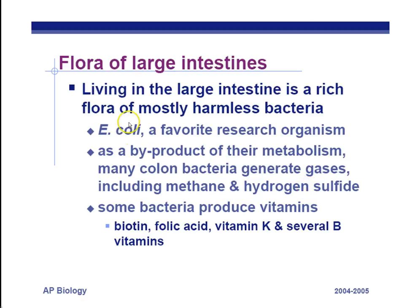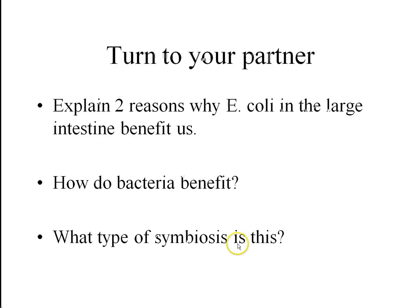Also, the E. coli that live in the large intestine produce some vitamins for us. This is mutualism — we benefit because we get these vitamins, and they also colonize the area, preventing bad bacteria from getting a foothold. Just by living in our large intestine, they prevent other things from growing in there. They benefit because they get the food that we can't break down. Remember, the other types of symbiosis are parasitism, commensalism, competition, and predation.